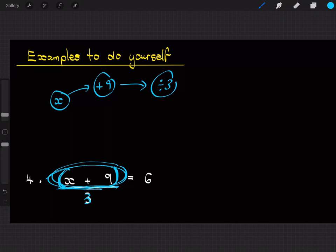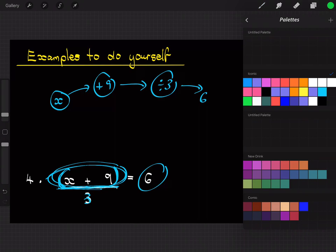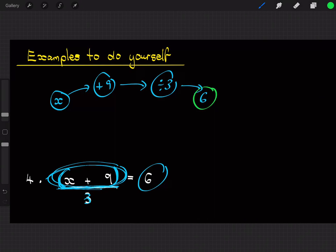And then our final answer was 6. So to work out what x is, all we do we go backwards and reversing operations. So starting at 6, we then do the opposite of dividing by 3, which is timesing by 3, then we do the opposite of adding 9, which is subtracting 9, and that will give us our value for x.